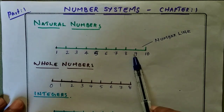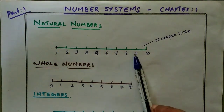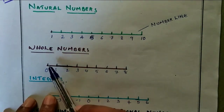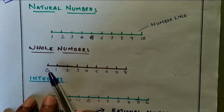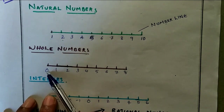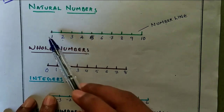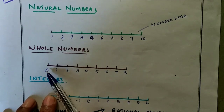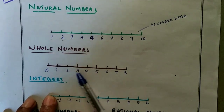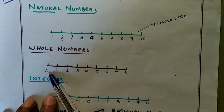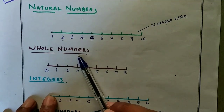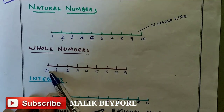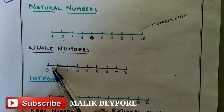This number system is called natural numbers. The next number system is whole numbers. In natural numbers, if we include zero, we plot zero below one, and it starts from zero, one, two, three, etc. This number system is called whole numbers. Including zero with the natural numbers gives us whole numbers.